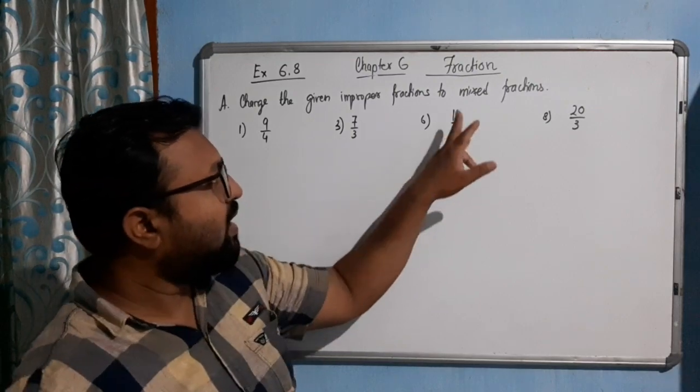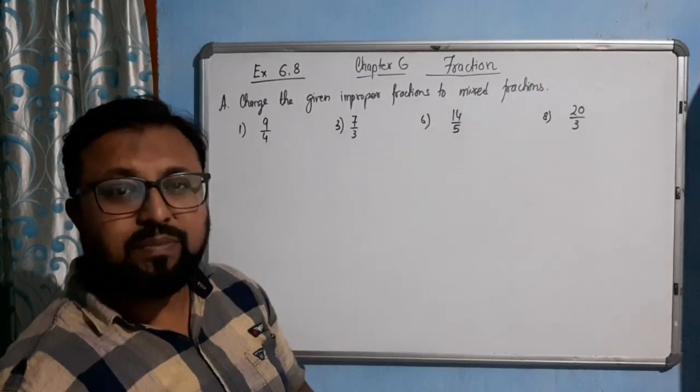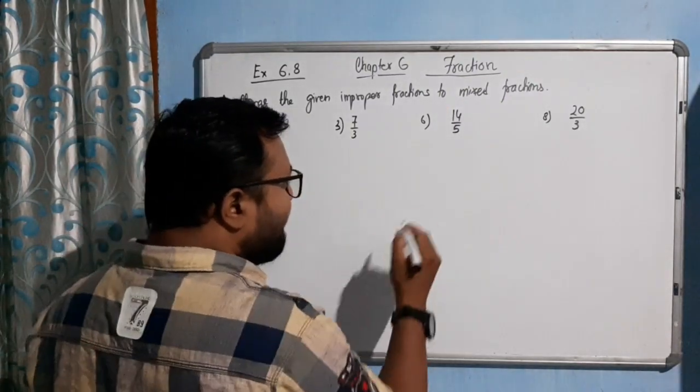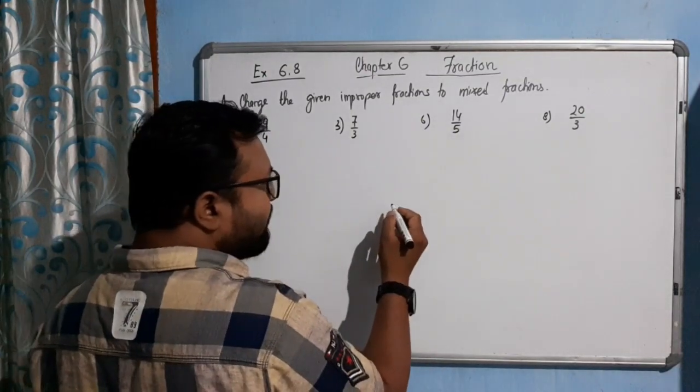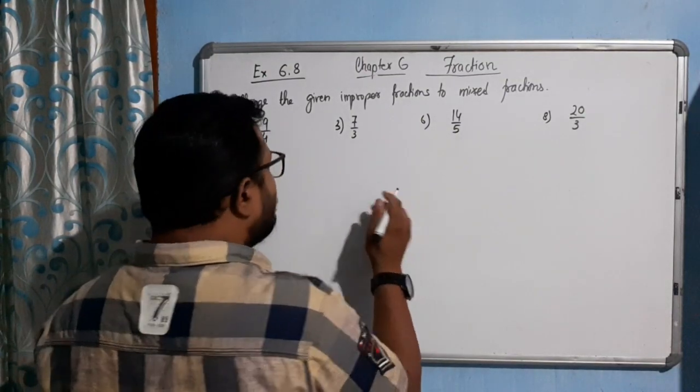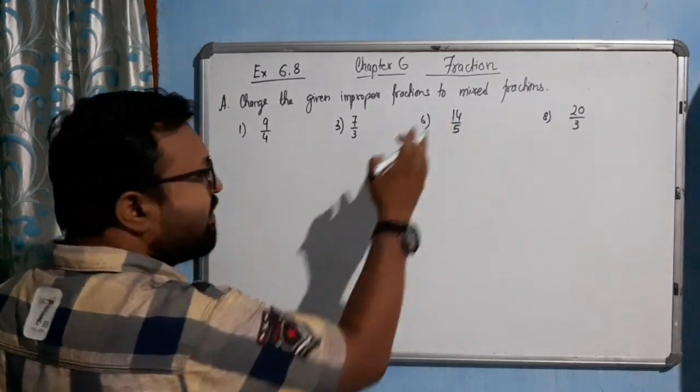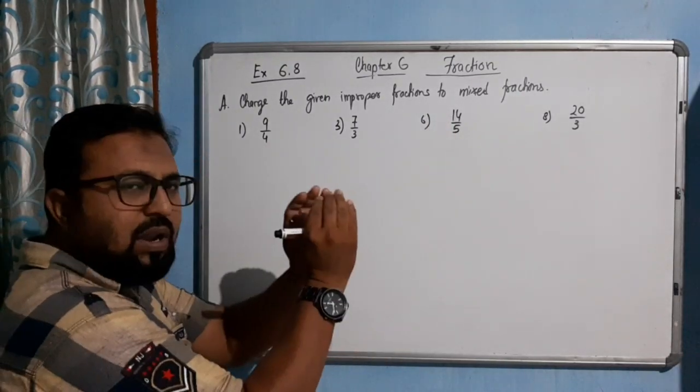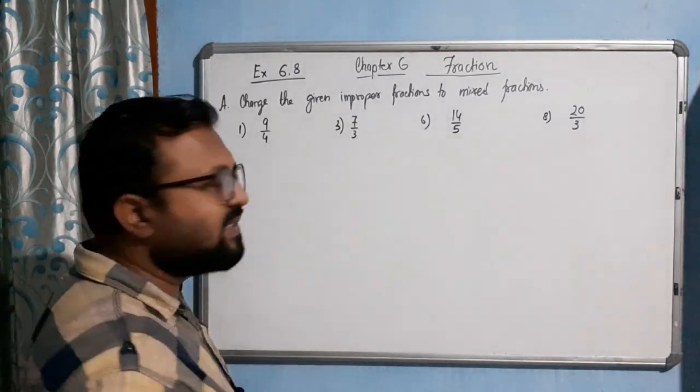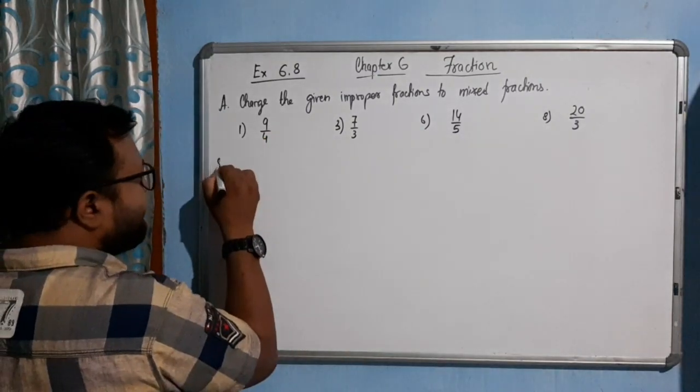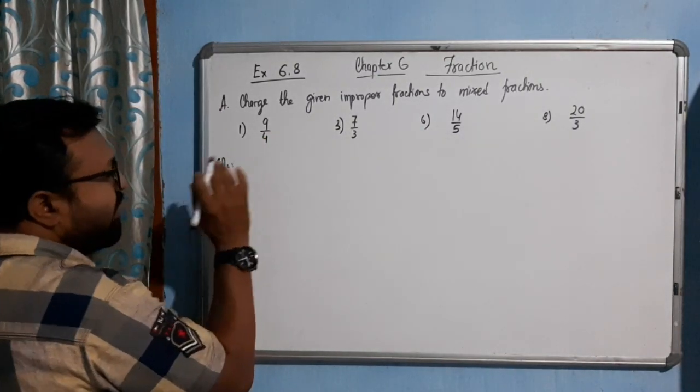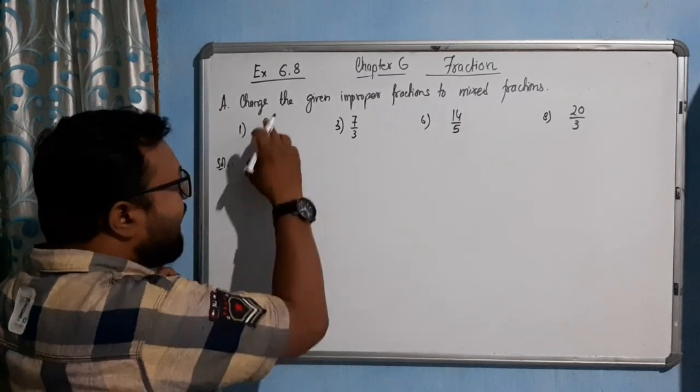These fractions can be converted into mixed fractions. Mixed fraction means there will be a number - suppose let me do this one and you can understand. It is the mixture, meaning the sum of a whole number and a proper fraction.